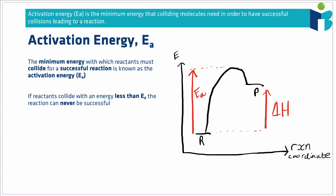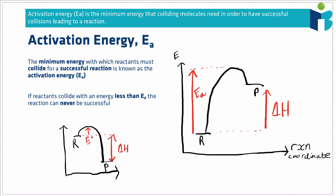We can draw something similar for an exothermic reaction. In this case, our activation energy is the energy difference between the reactants and the highest energy point — and that's the general rule. Whether it's exothermic or endothermic, our activation energy is the difference in energy between our reactants and the highest energy point on our energy profile.